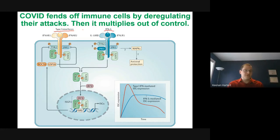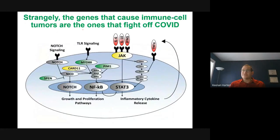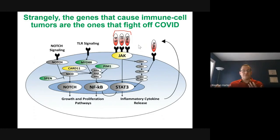Strangely, the cytokines that cause lymphomas — the ones I study — are the same ones that help you fight. If you have too many fight signals at the wrong time, you can also get cancer. It's a very difficult balance between good and bad when you look at our immune system. You can have hyperactive immune systems that are out of control, or compromised ones that can't put up the fight. We are still not really close to finding out what the perfect immune system really looks like.